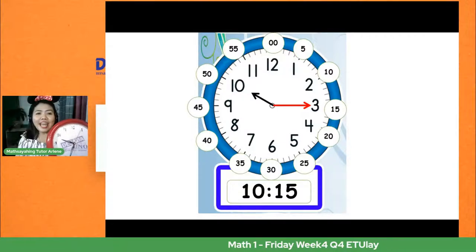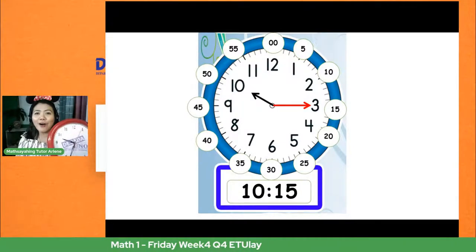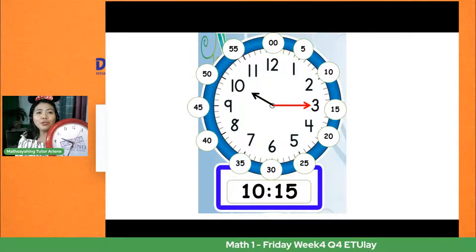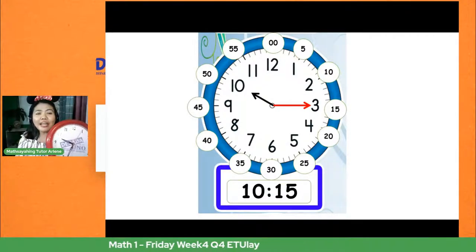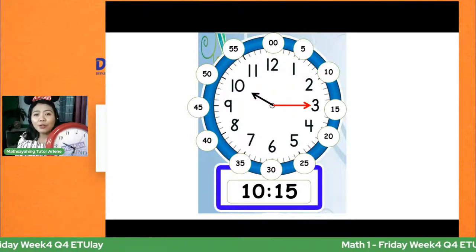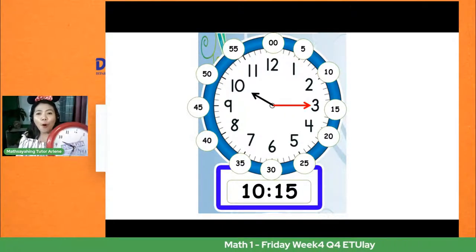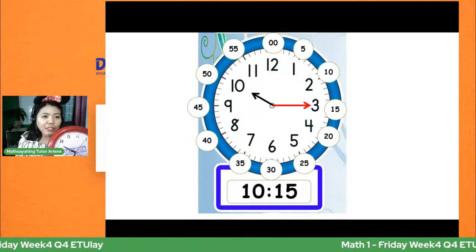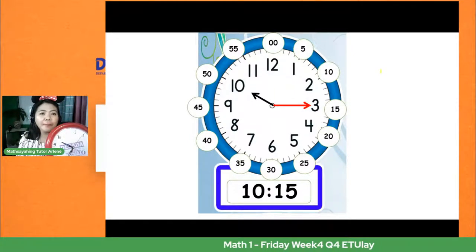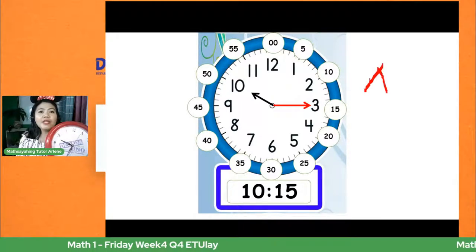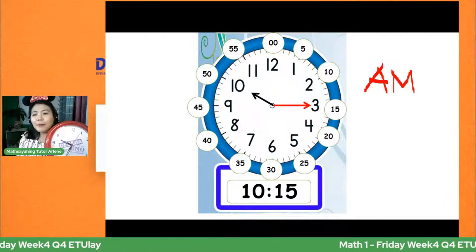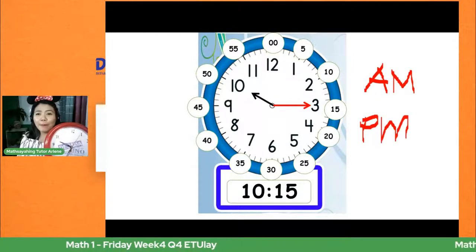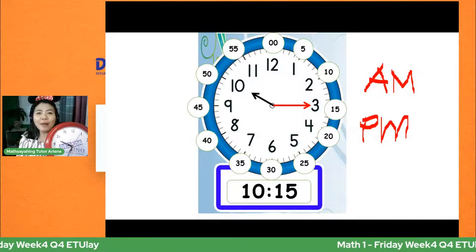Meron tayong AM at PM. Ang AM ay umaga, at ang PM naman ay hapon. Tingnan natin: ang mahabang kamay ay nasa number 6, ang maikling kamay ay nasa number 10. Una natin sasabihin ang nasa maikling kamay at ito ay 10. At ang nasa mahabang kamay — bilang lang tayo ng minuto: 5, 10, 15, 20, 25, 30. Ibig sabihin, yan ay 10:30.